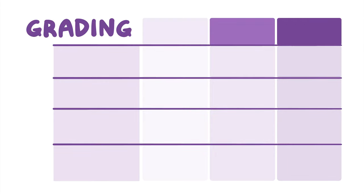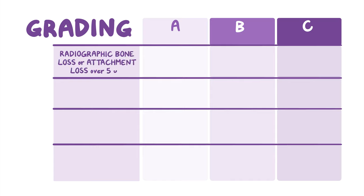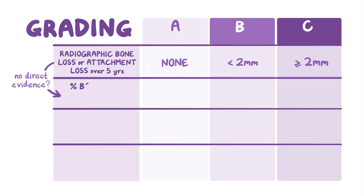Next, let's look at grading, which indicates the rate of disease progression and response to treatment. The disease should be classified as grade A, B, or C. The primary criteria for grading is the amount of radiographic bone loss or attachment loss over the past five years. For grade A, no bone loss or CAL over five years. Grade B, less than two millimeters loss over five years. And grade C, greater than or equal to two millimeter loss over five years. When no such direct evidence is available, percent bone loss divided by age can be used in conjunction with case phenotype and risk factors to establish the grade.